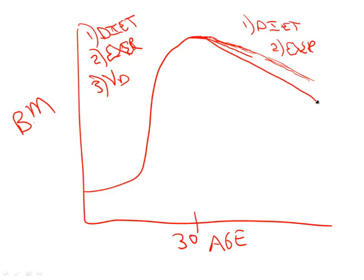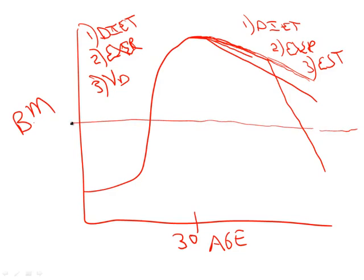When bone mass crosses below a critical threshold, the bone becomes weak and fractures — that is osteoporosis. The most common forms are senile osteoporosis (the longer you live, the more likely you cross that line) and postmenopausal osteoporosis (once estrogen is lost after menopause, bone is lost more rapidly).